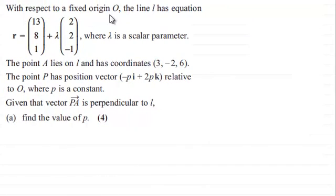we're told that with respect to a fixed origin O, the line l has this equation with position vector r equaling (13, 8, 1) plus lambda times the vector (2, 2, -1), where lambda is a scalar parameter.